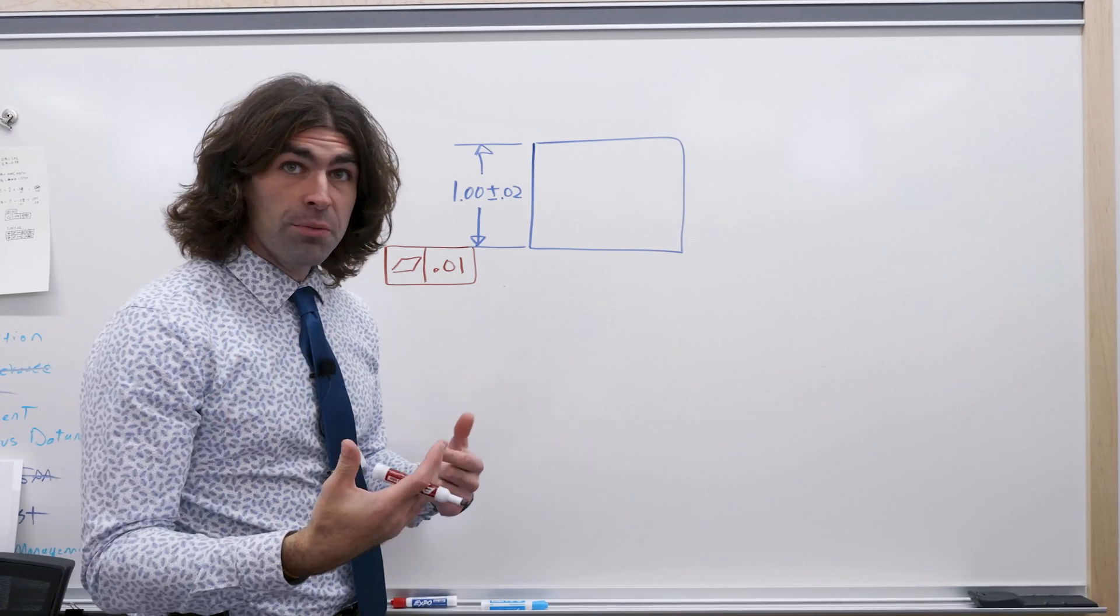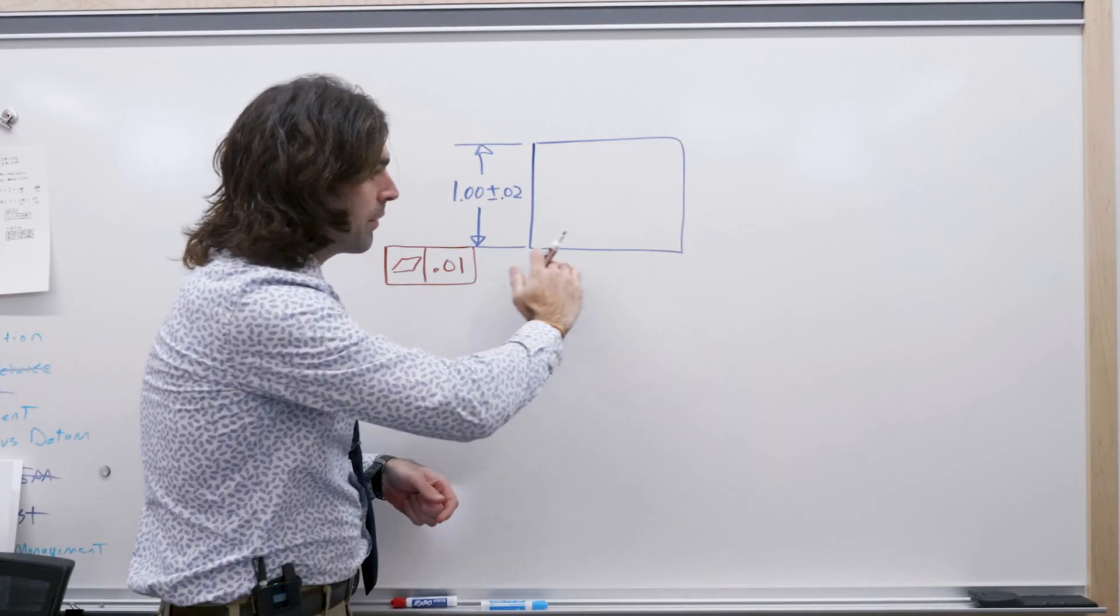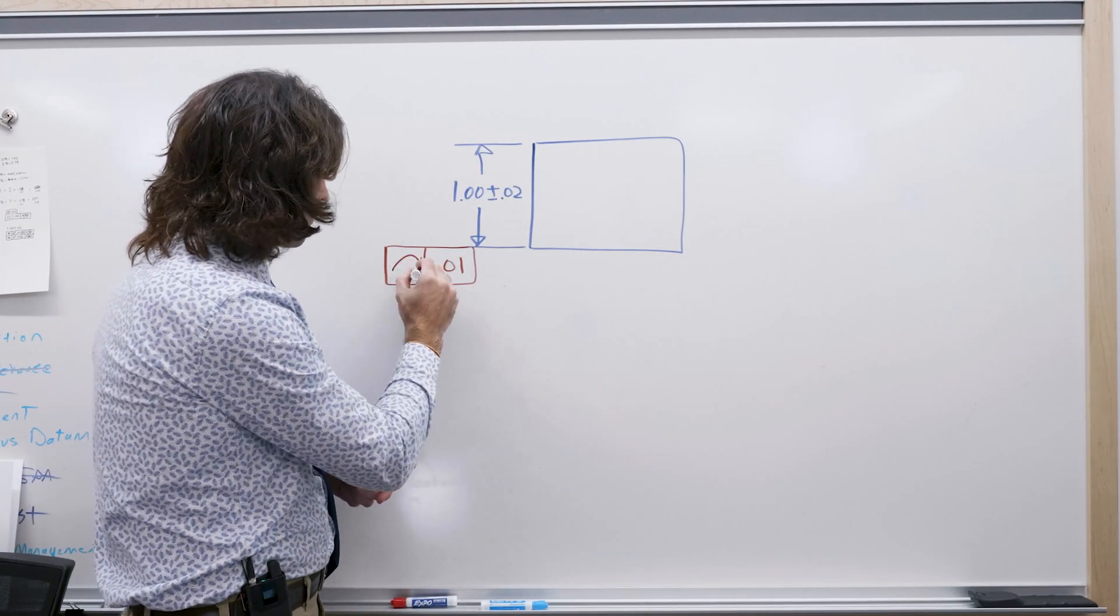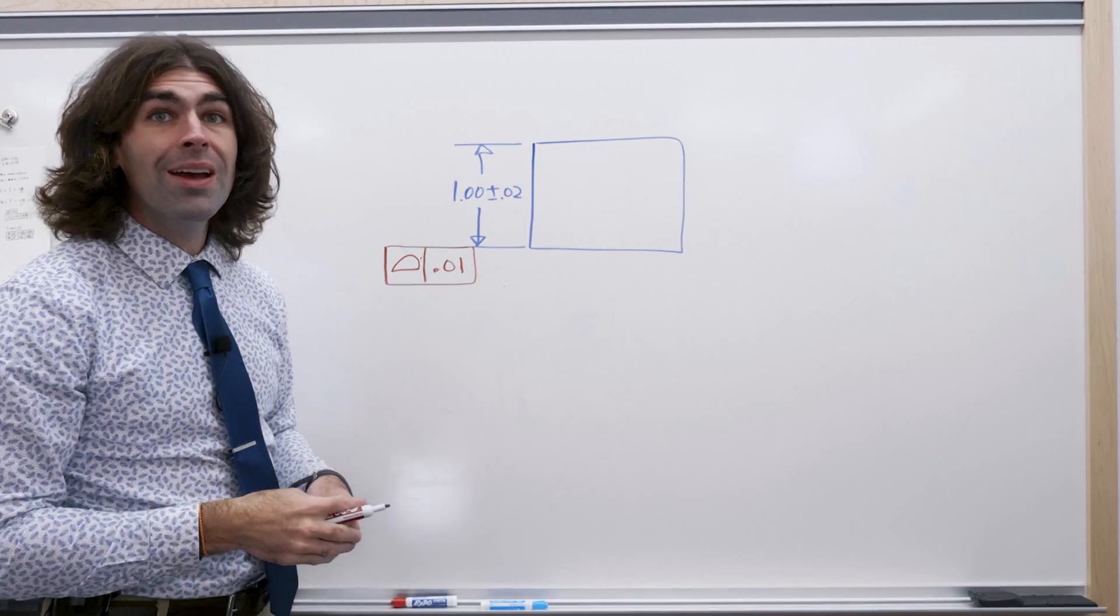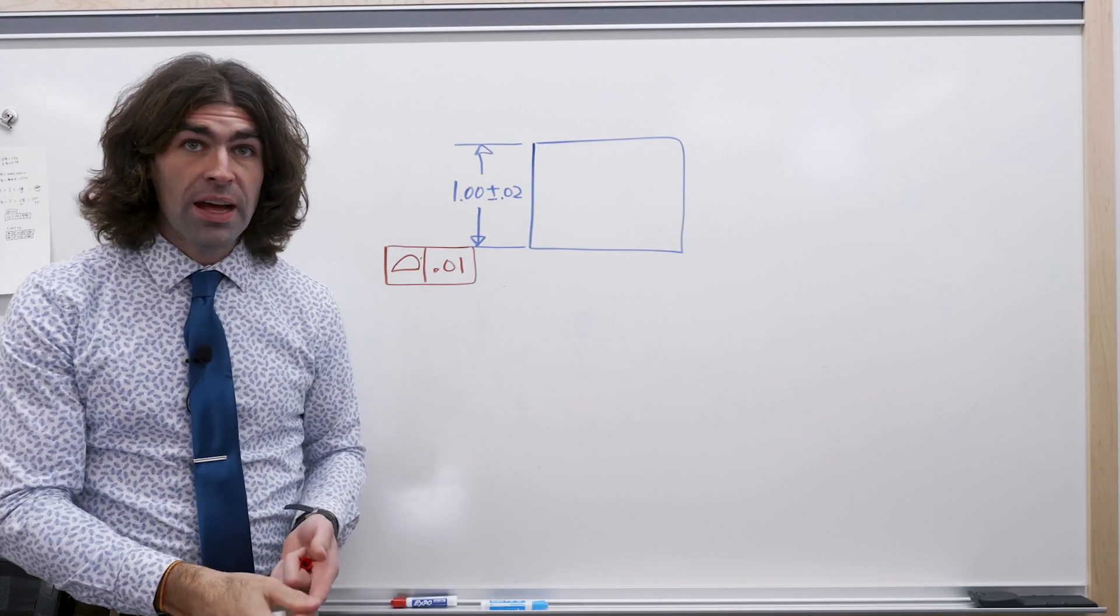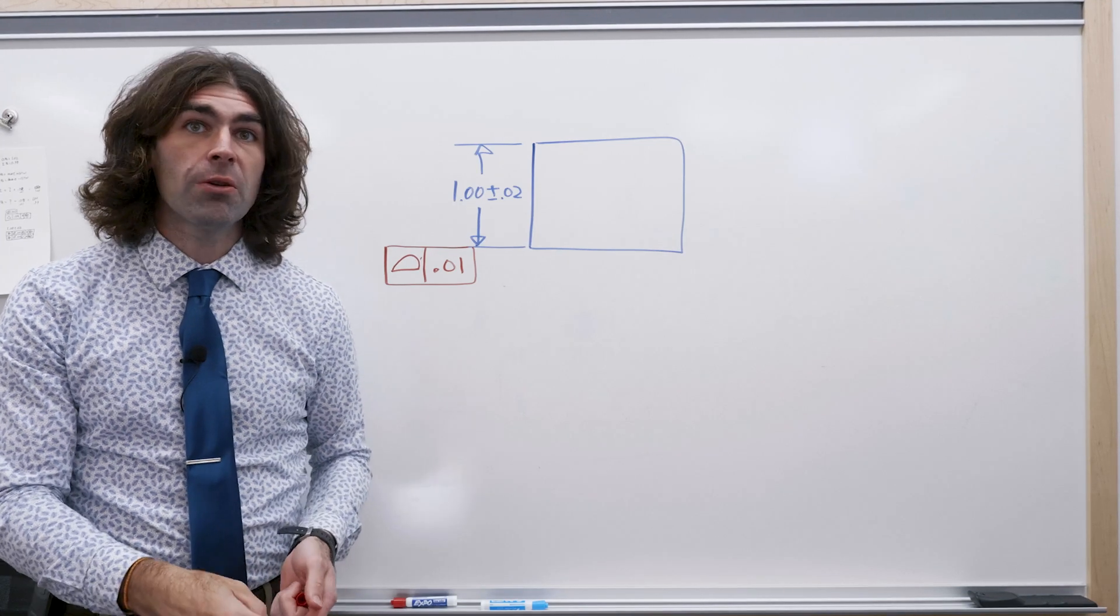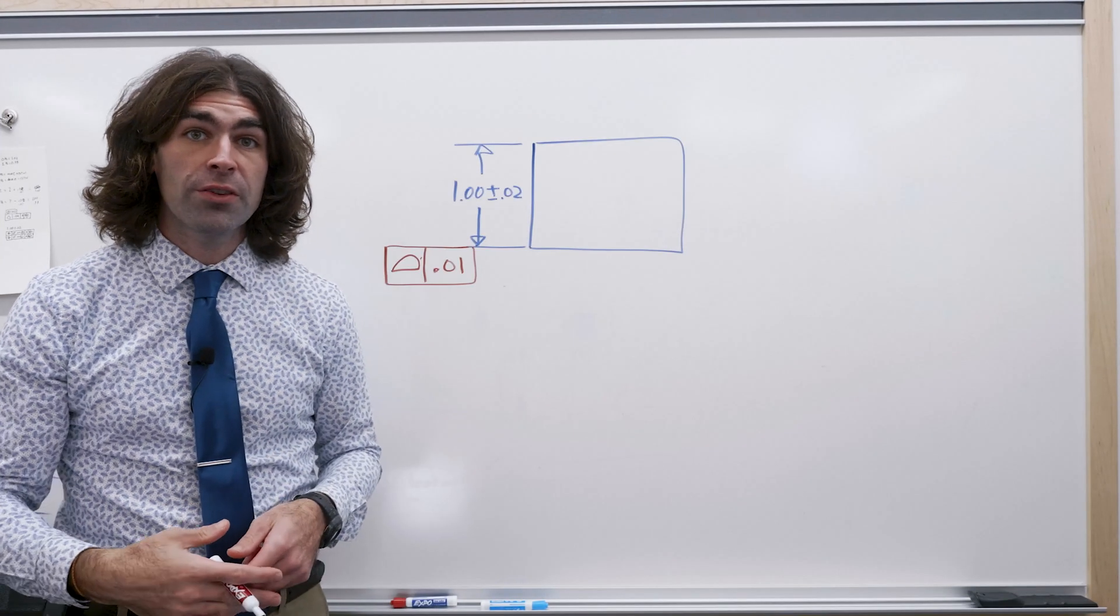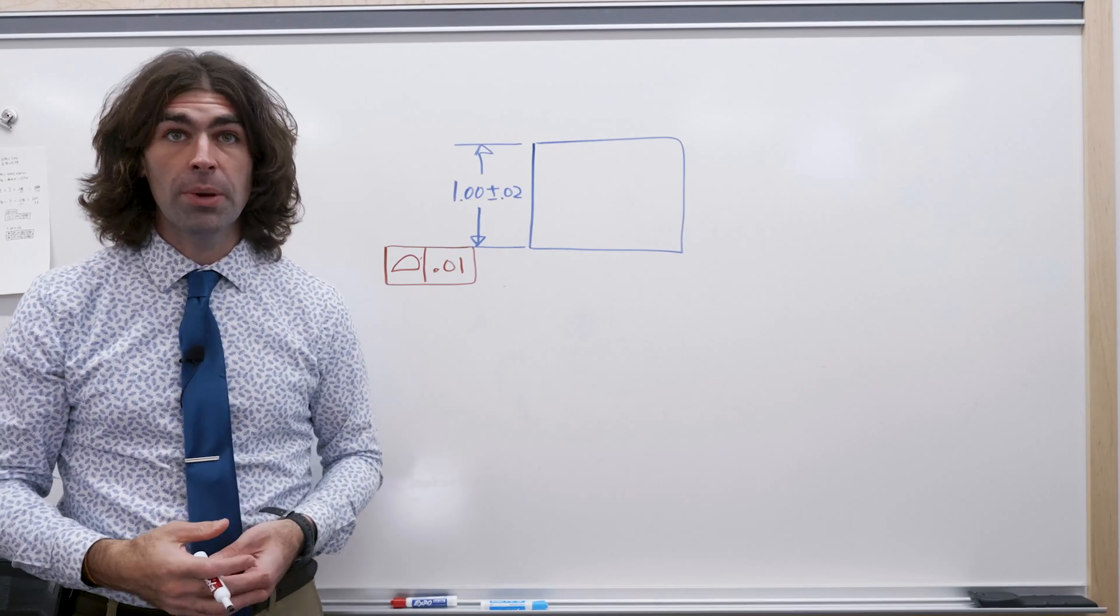Now in this particular case when we have a flat plane, it's controlled by a size dimension. If we change this to profile of a surface, it would mean the exact same thing for a tolerance stack up, for manufacturing, and for inspection. You're checking it the exact same way on the surface plate or on the CMM.